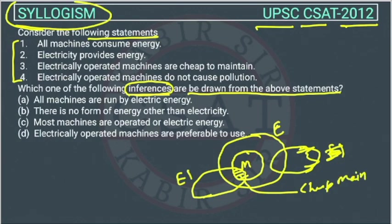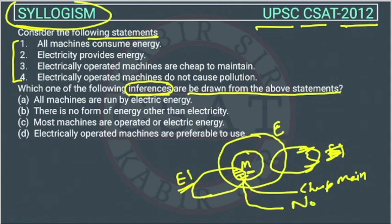Now the fourth statement: electrically operated machines — so about this shaded area only, because this is electrically operated machines. The statement says electrically operated machines do not cause pollution — no pollution due to this.